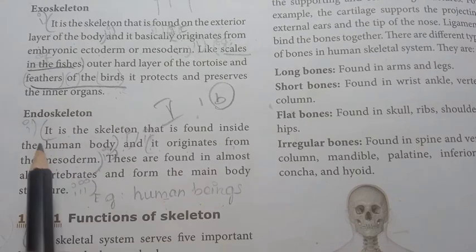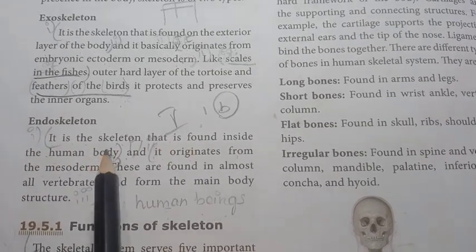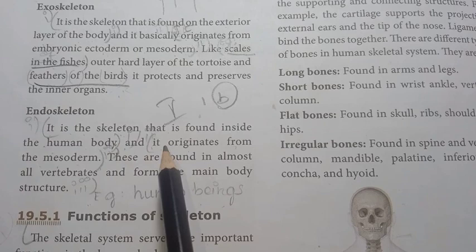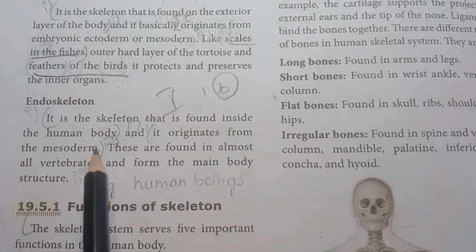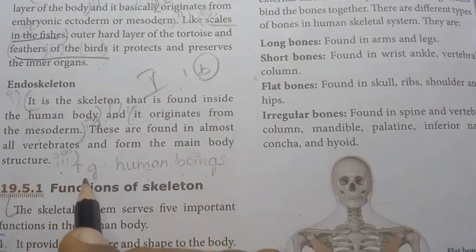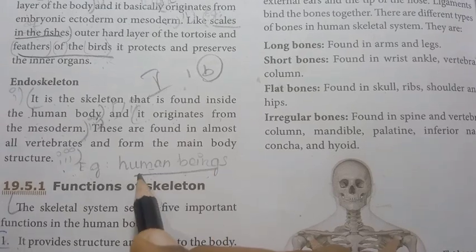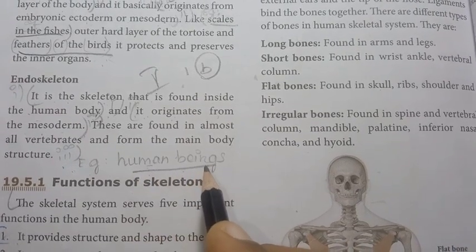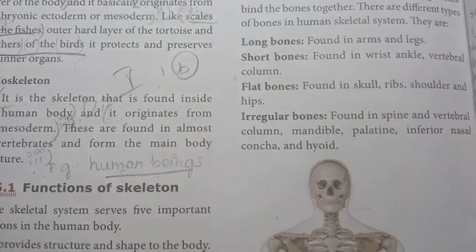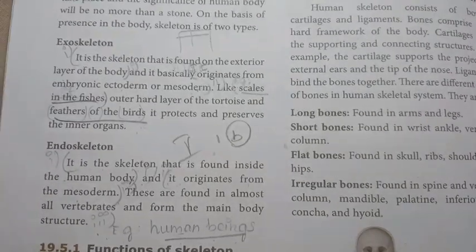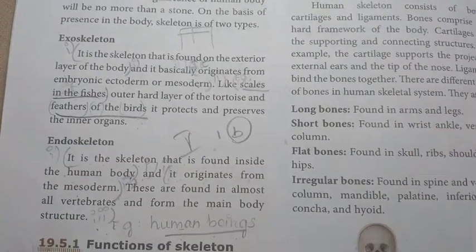Endoskeleton is the skeleton found inside the body. It originates from the mesoderm. Example: human beings.